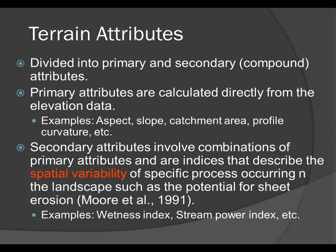Terrain analysis falls into two categories. Primary attributes are the easy ones to understand: aspect — which way the hill is facing; slope — how steep the hill is; catchment area — the area that collects water; and profile or plan curvature. These are basic features derivable from elevation data. Secondary attributes combine some of those to understand key indices appropriate for analytical processes, such as stream index and stream power. These reveal the spatial variability of variables to help us plan.